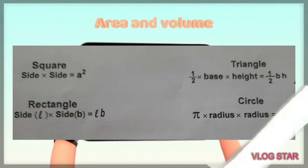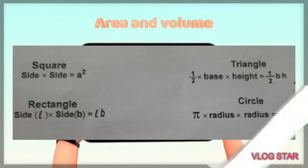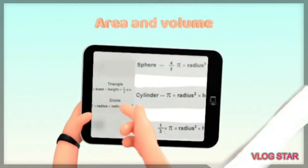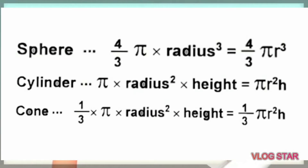Square: A squared. Rectangle: L × B. Triangle: half × B × H. Circle: π × A squared. Sphere: 4/3 × π × A cubed. Cylinder: π × A squared × H. Cone: 1/3 × π × A squared × H.